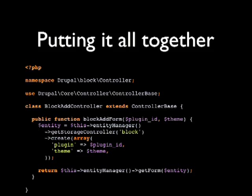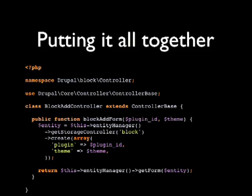The actual class in core shows that plugin_id and theme from the route placeholders are the exact parameter names of the method. Even though theme was optional in the route, there's no equals null in the method because we specified null in defaults — so it always has a value. The controller calls out to the entity manager, creates a new block, and presents the form. This is about the right size for a controller — it delegates to the storage controller and entity manager, keeps everything separate and clear.